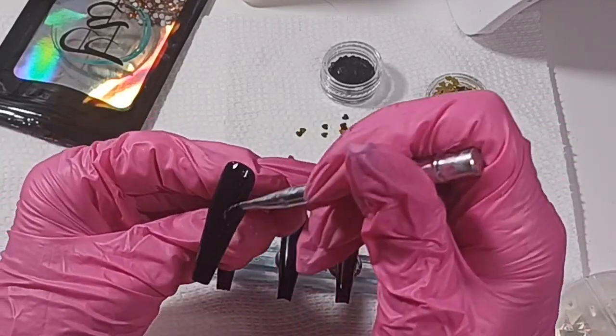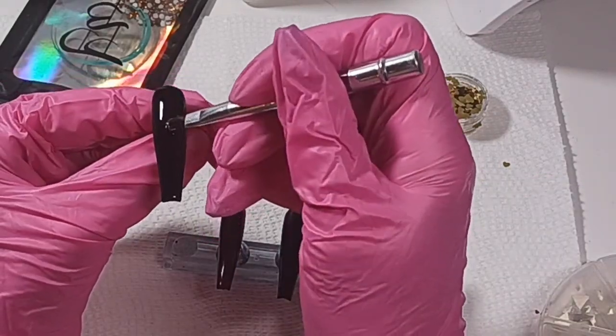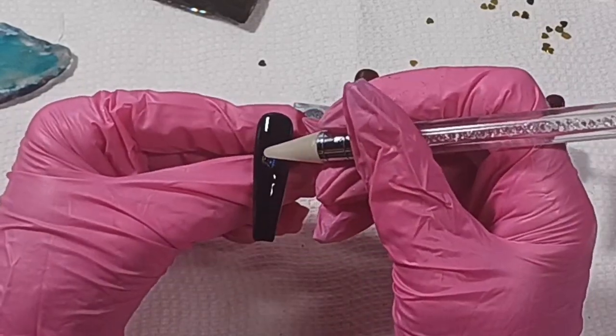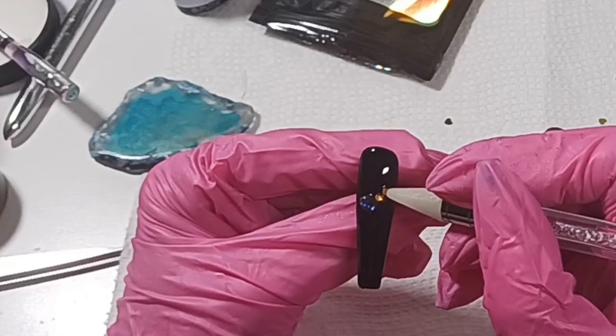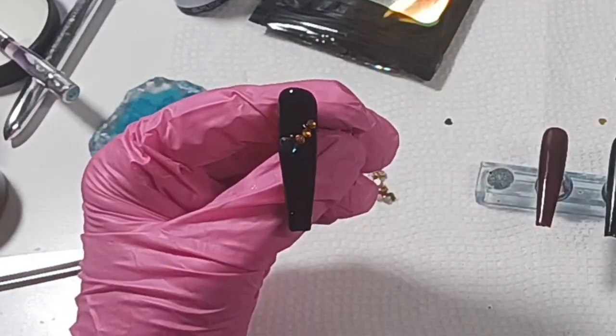Every time you dip it into your builder gel, you're going to be transferring black in there or red or whatever color you're using. Some gels don't have that much of a sticky layer, some have a lot. This is Model Ones Inspire Gel and they have a ton of sticky layer.